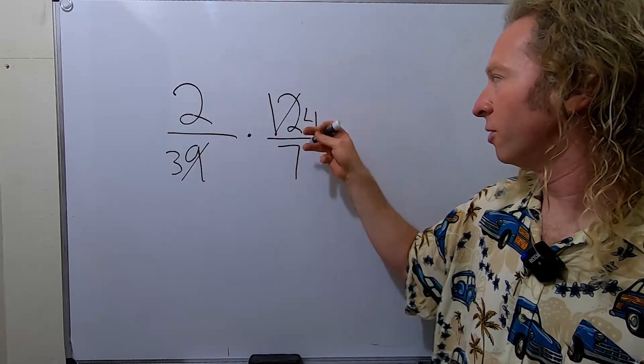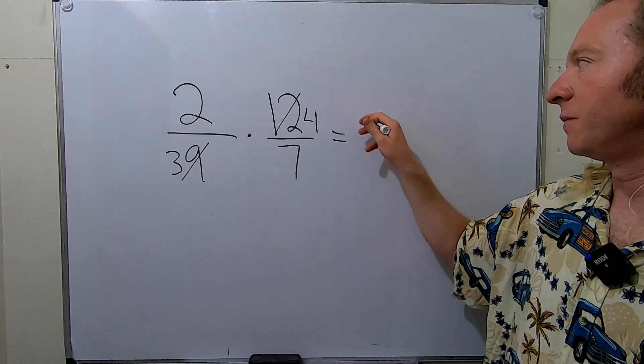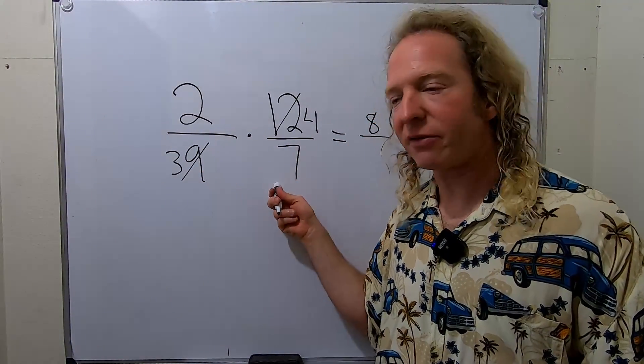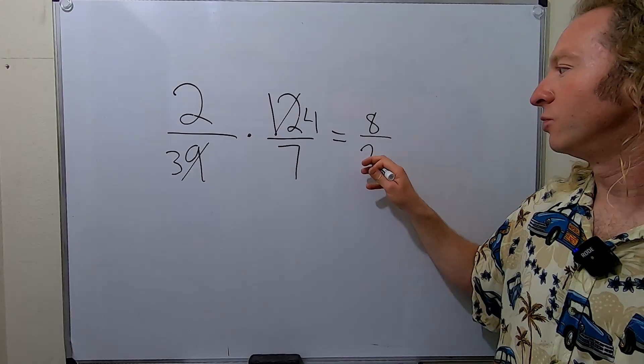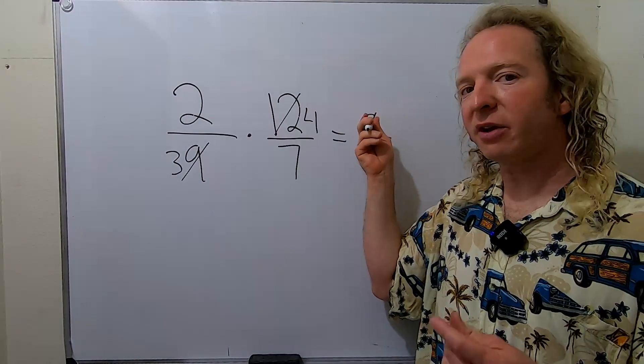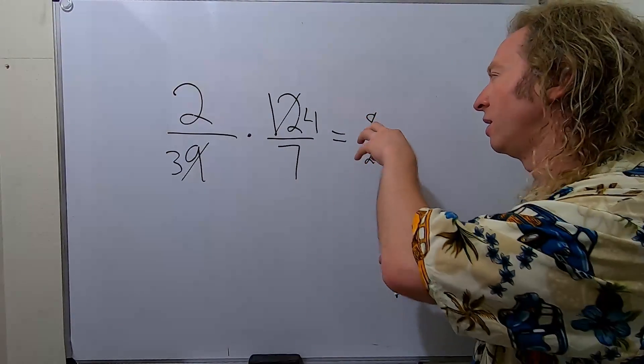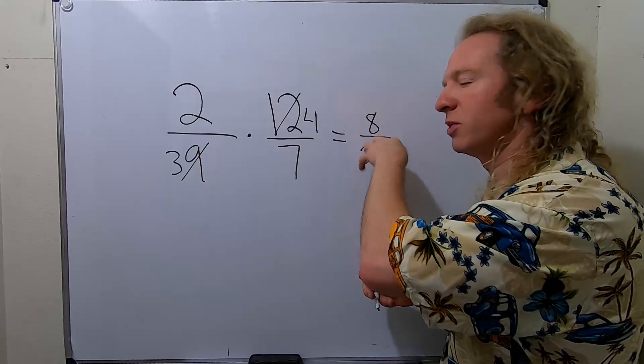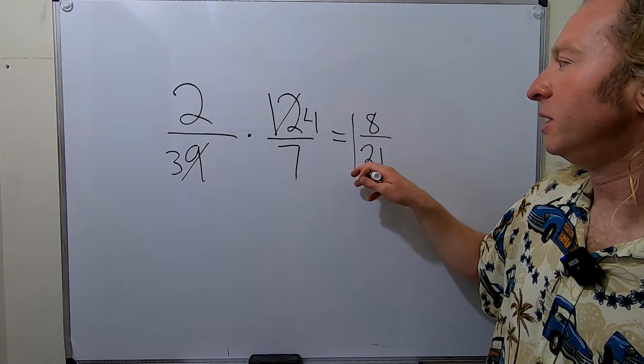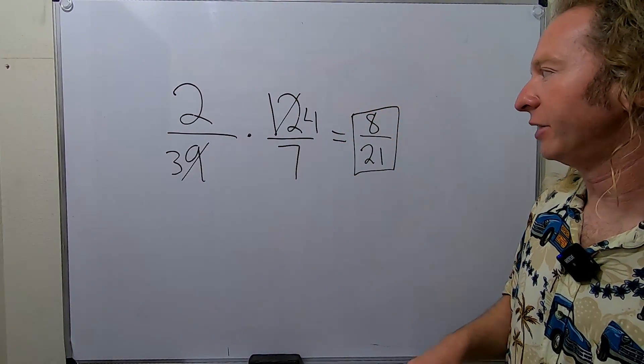It's 2 times 4, which is equal to 8. And then 3 times 7, which is equal to 21. Then at this point, they don't have any more common factors. Like, you can't get the same number that goes into both of them. So that would be the final answer.